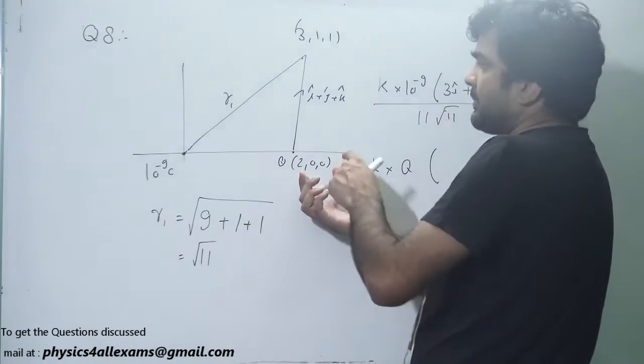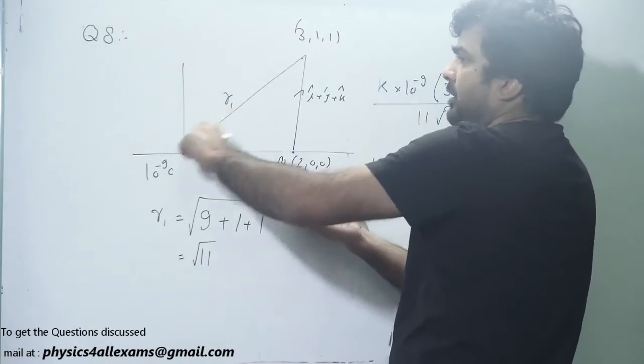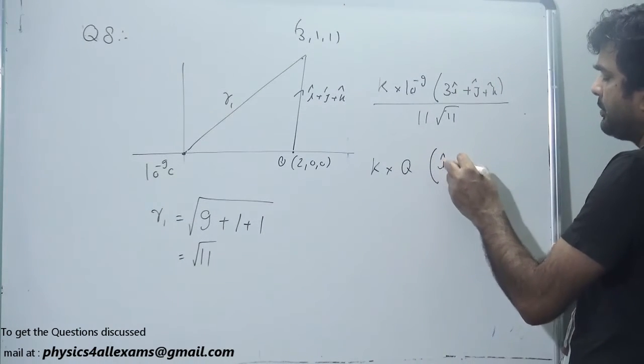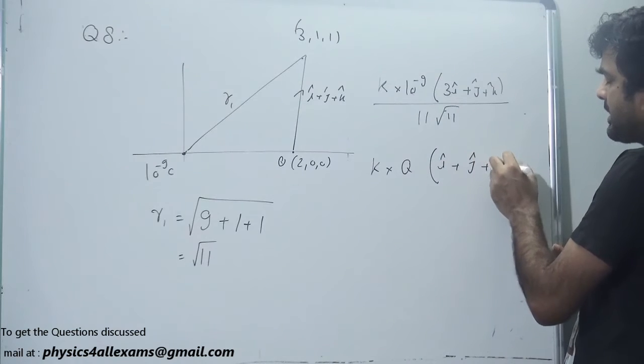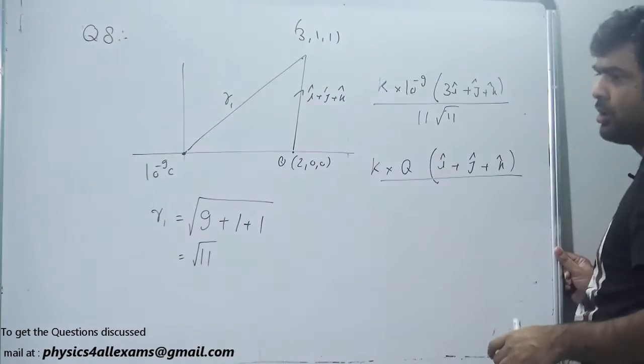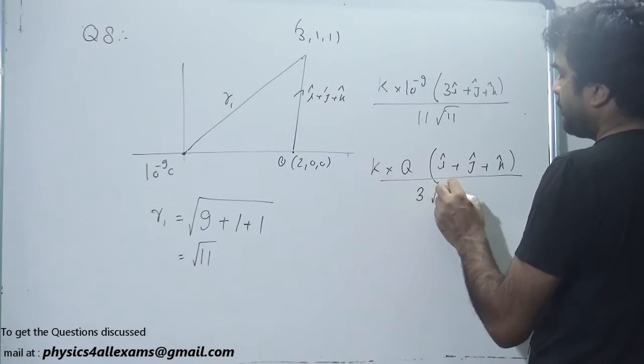We have subtracted this position vector minus this position vector. So it will be i cap plus j cap plus k cap upon magnitude will be root 3. So R cube will be 3 root 3.